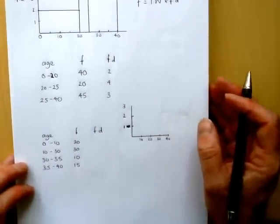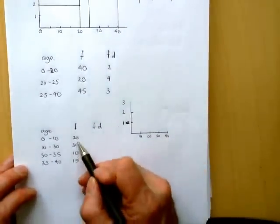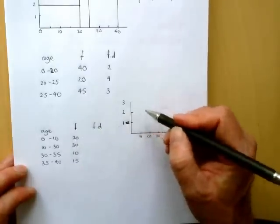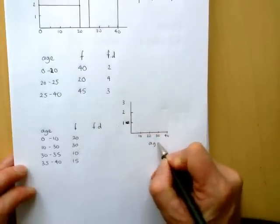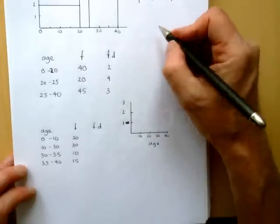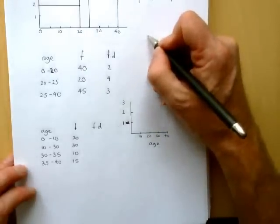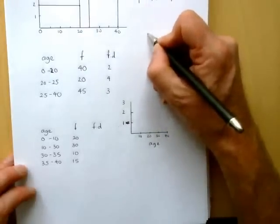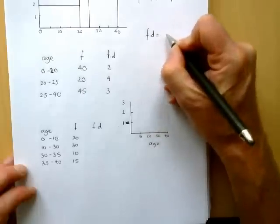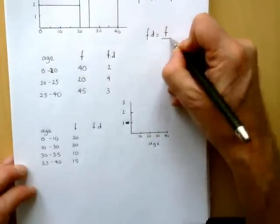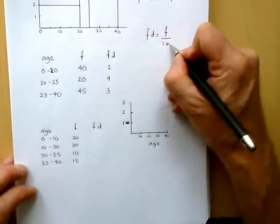Now we can have the information presented the other way round. We can be told the frequencies, and then we need the frequency densities to draw the histogram. So instead of multiplying, we want to take the fact that if we make the frequency density the subject of the equation, the frequency density will make the frequency divided by the interval width.